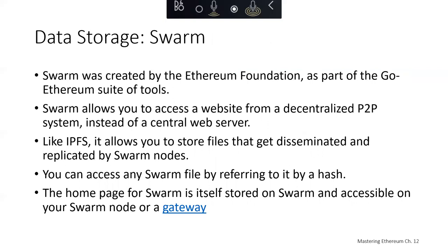Swarm is an alternative to IPFS — another content-addressable peer-to-peer storage system. Swarm was created by the Ethereum Foundation as part of the GoEthereum suite of tools. Like IPFS, Swarm allows you to store files that get disseminated and replicated by Swarm nodes. You can access any Swarm file by referring to it by a hash. Swarm allows you to access a website from a decentralized peer-to-peer system, and the Swarm homepage itself is stored on Swarm and accessible via a Swarm node or gateway.